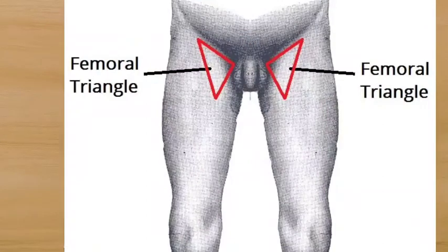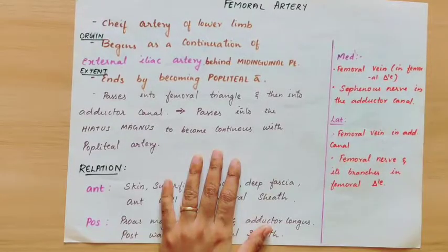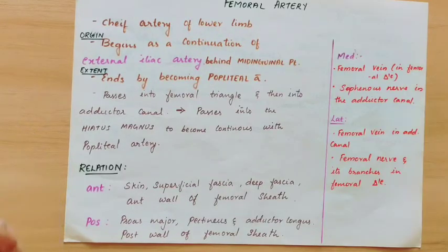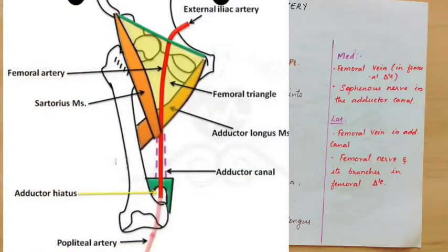The femoral triangle is formed by the sartorius muscle, adductor longus muscle, and the inguinal ligament. The apex of the femoral triangle is formed by the tendons leading into the adductor canal. The adductor canal is important for the blood vessel structures. The femoral artery passes through the adductor canal, then through the hiatus magnus, and ends by becoming the popliteal artery.